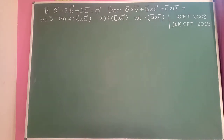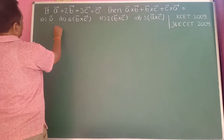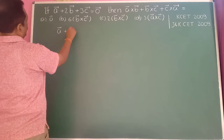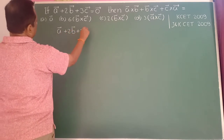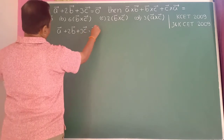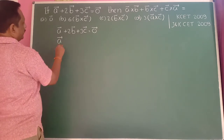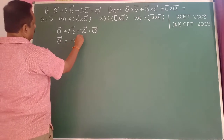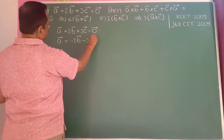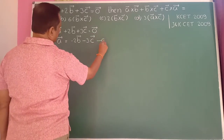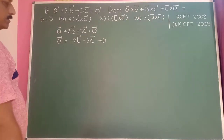If the vector a-bar plus 2b-bar plus 3c-bar equals the null vector, then we need to find a-bar cross b-bar plus b-bar cross c-bar plus c-bar cross a-bar. Given a-bar plus 2b-bar plus 3c-bar equals zero, taking 2b-bar and 3c-bar to the other side, a-bar equals minus 2b-bar minus 3c-bar. Now take the cross product of b-bar on both sides.